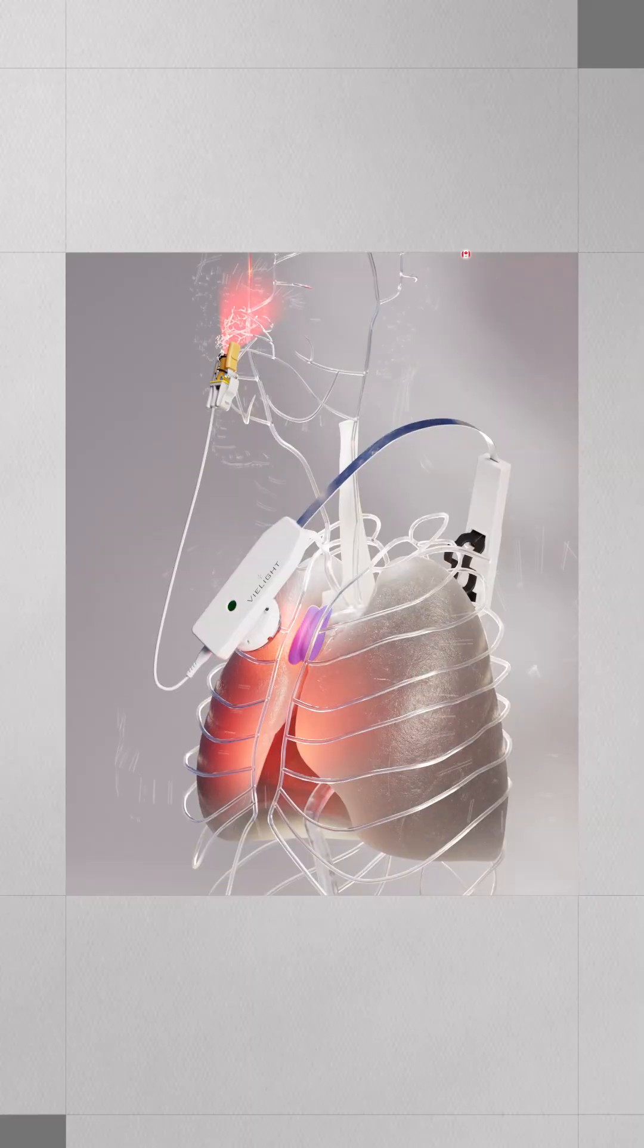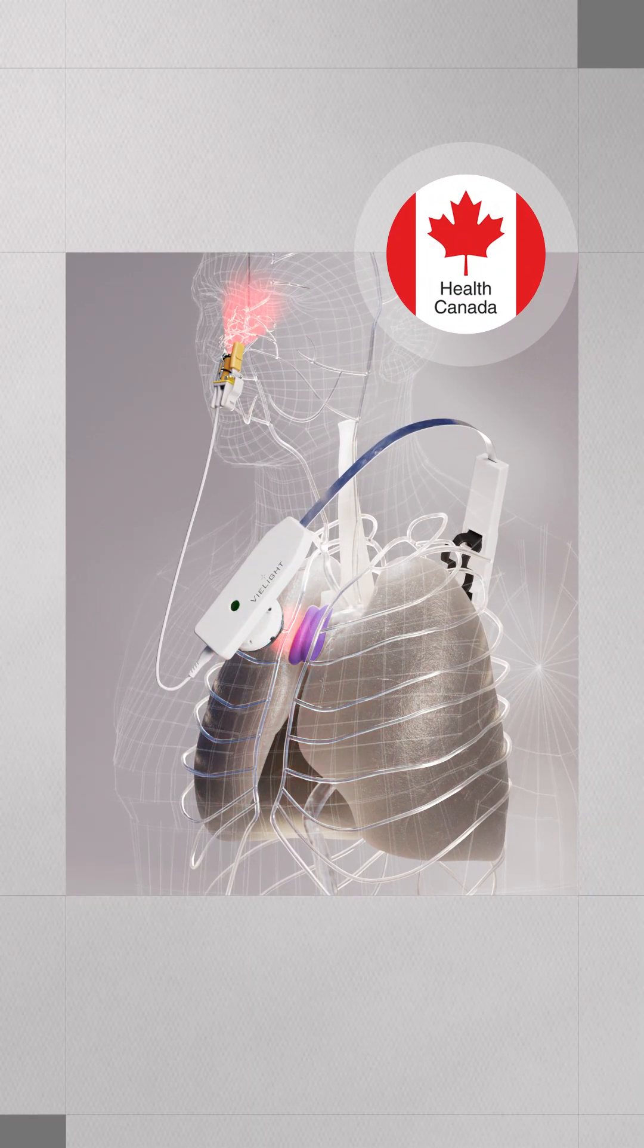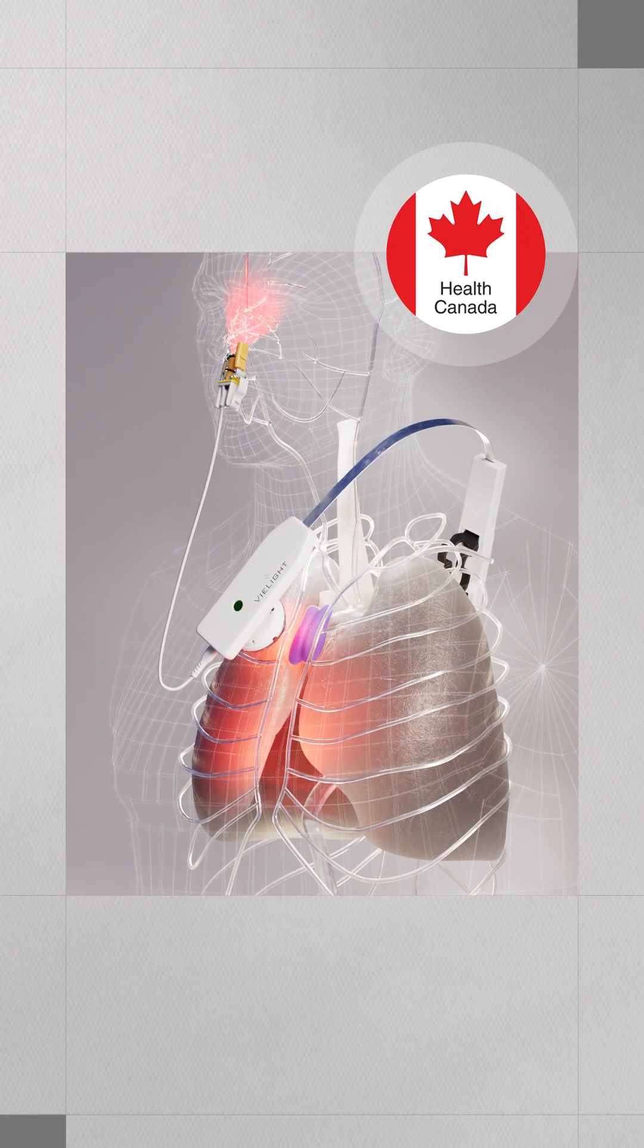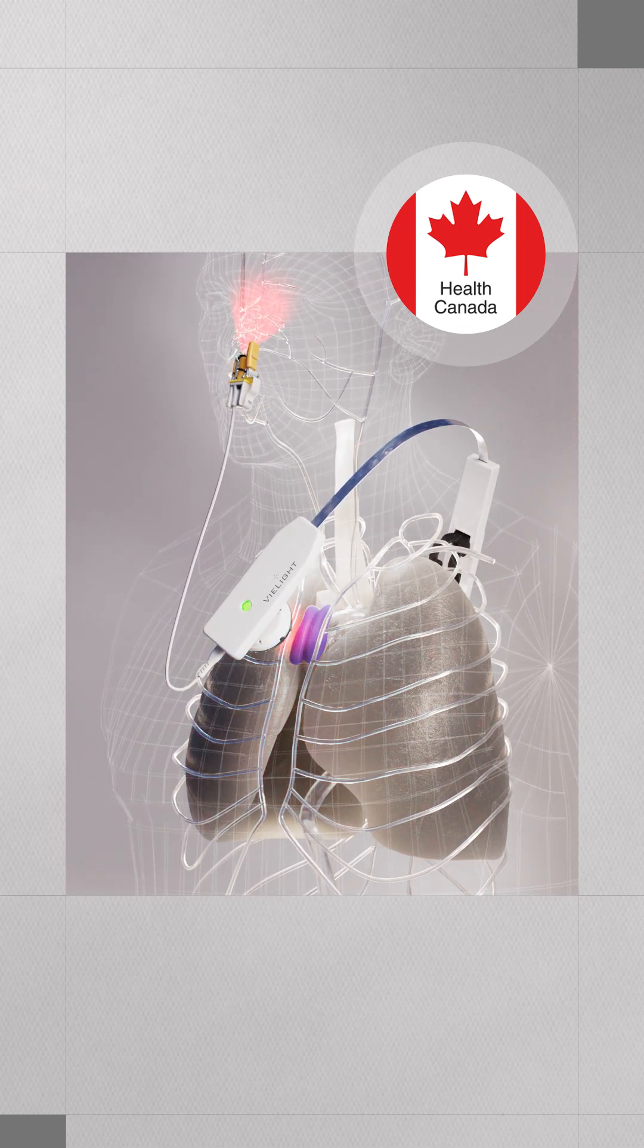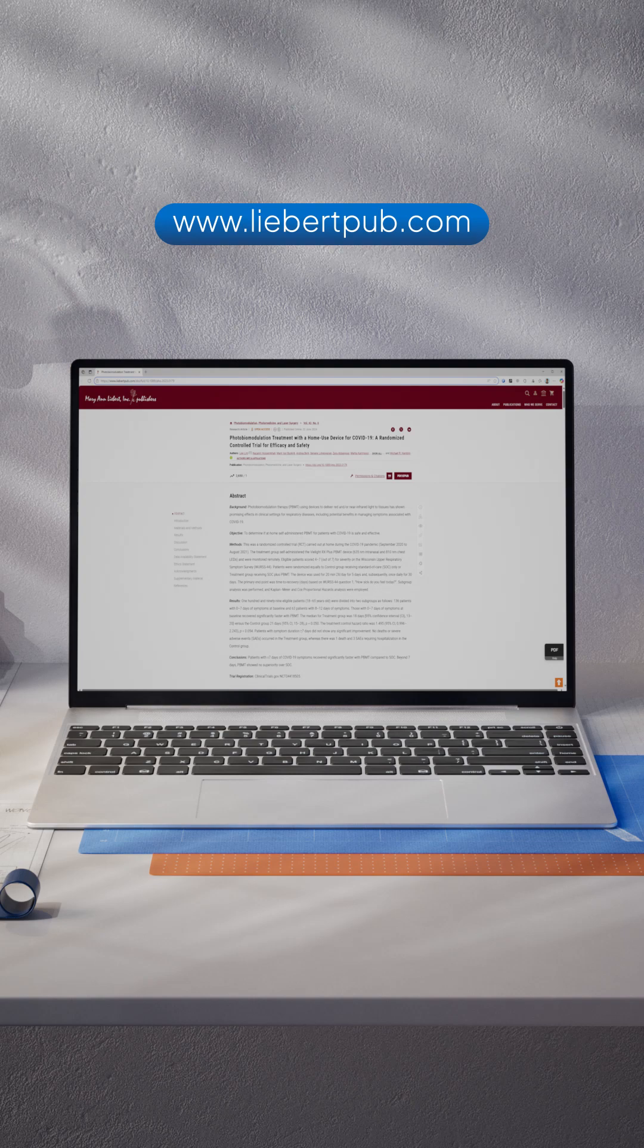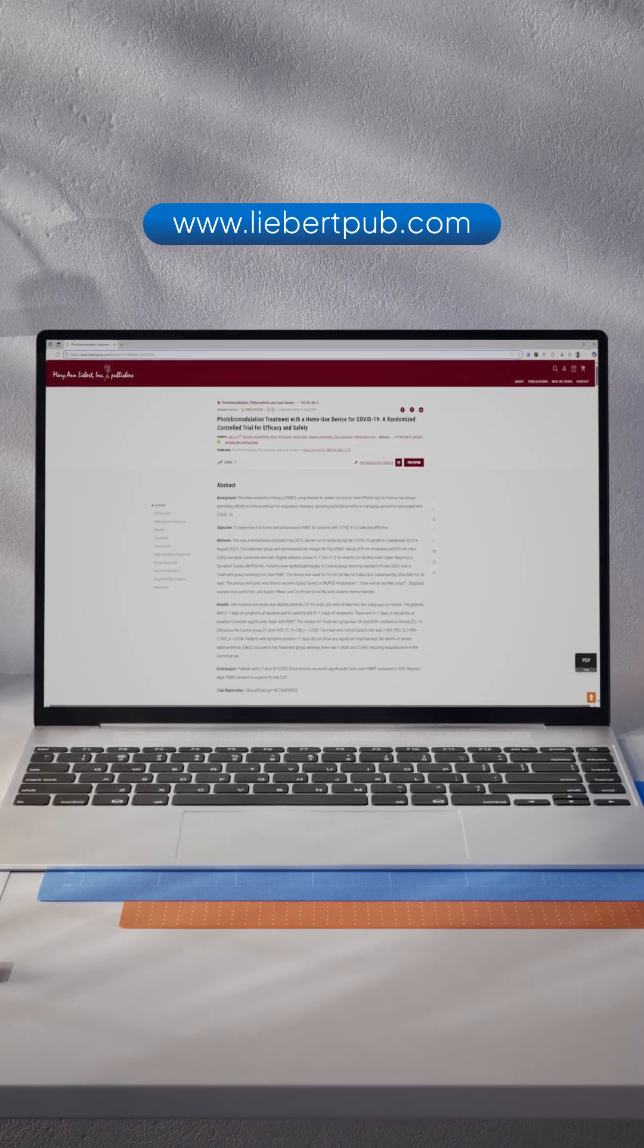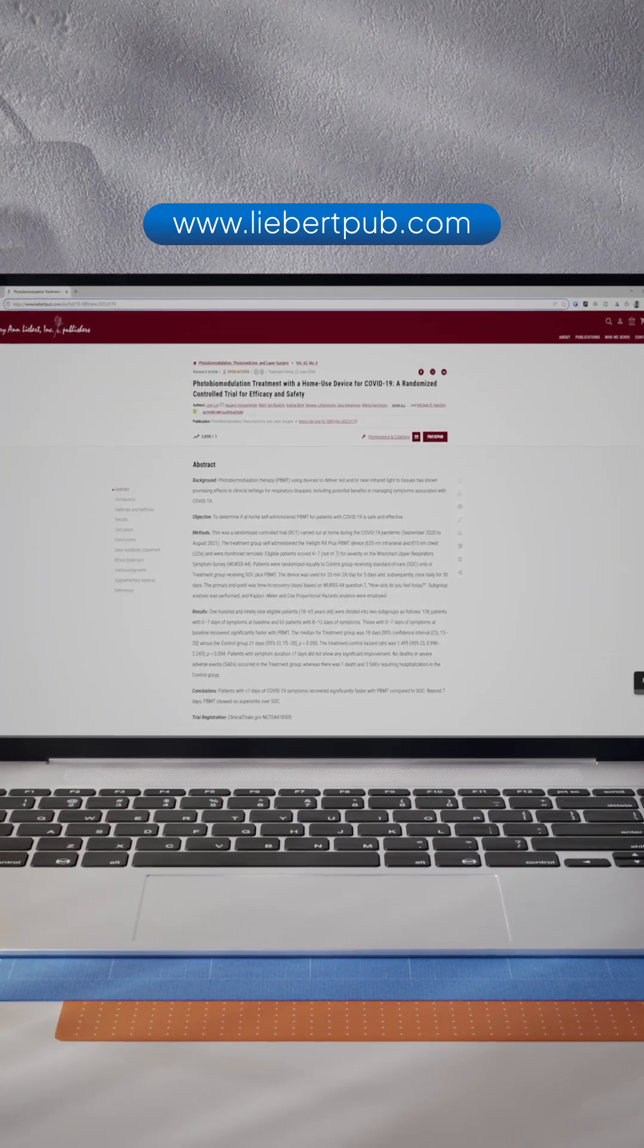The V Light RX Plus is supported by a Health Canada medical device license intended to accelerate the recovery of upper respiratory symptoms in viral infections. The results are published in a peer-reviewed major scientific journal and available online. To date, no other photobiomodulation device has been able to achieve these results because they lack the intranasal component.